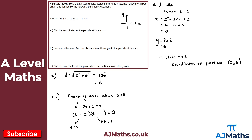We get two points where the parametric curve cuts through the y-axis, and both values of t are greater than 0, so they satisfy the required condition. When t equals 2, we already found that point in part a — the curve crosses the y-axis at (0, 6).